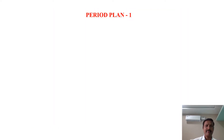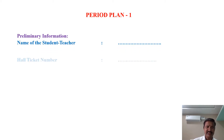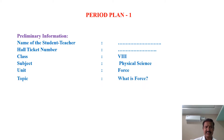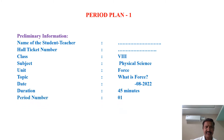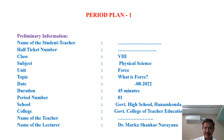In preliminary information, you have to write the name of the student teacher, hall ticket number, class, subject, unit, topic, date, duration, period number, the school in which you are going to teach, the college in which you are studying, name of the teacher, and name of the lecturer.